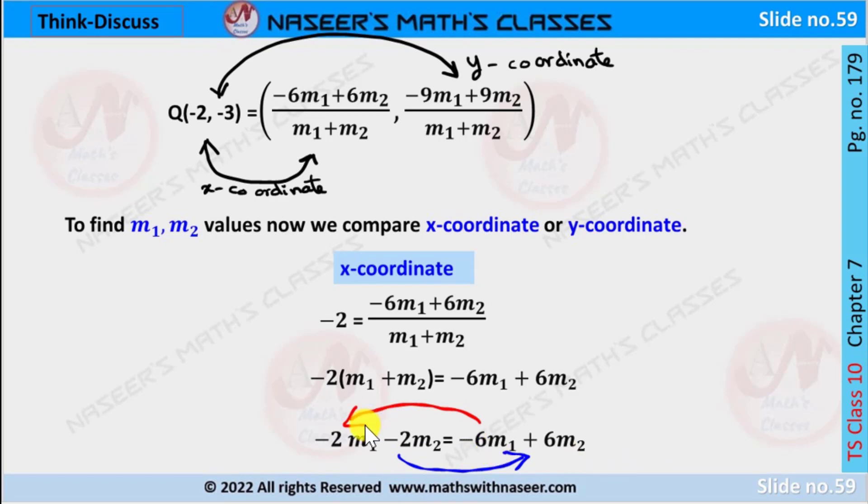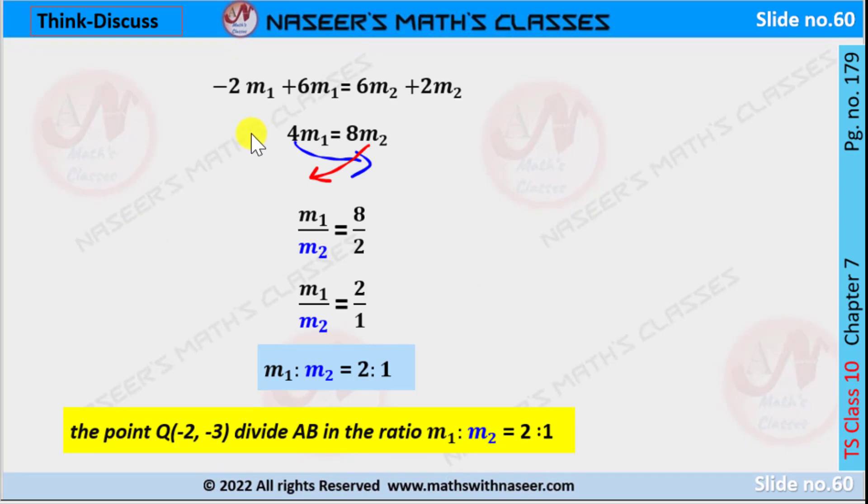And -6m₁ from RHS to LHS. After transposition, the equation is written as -2m₁ + 6m₁ equals 6m₂ + 2m₂. By simplifying -2m₁ + 6m₁ we get 4m₁.